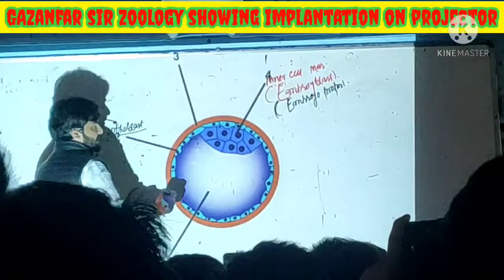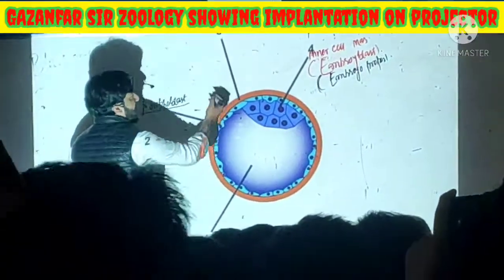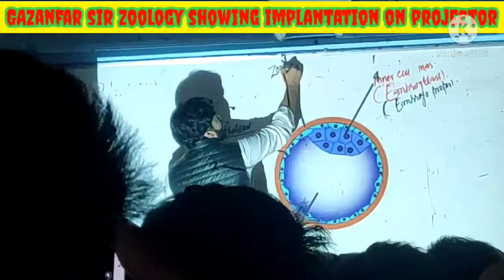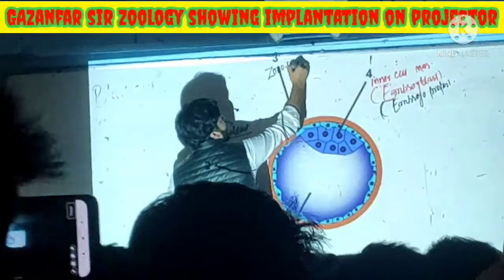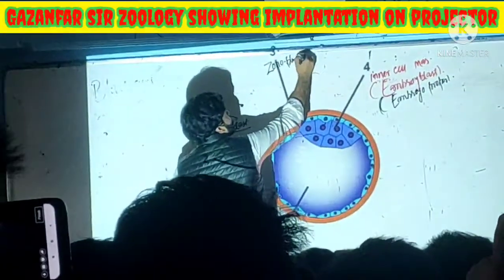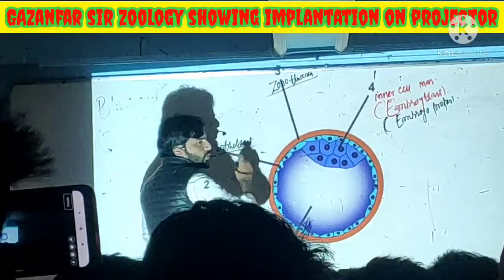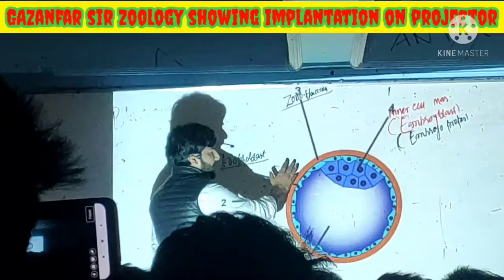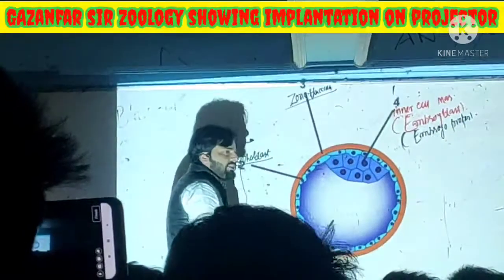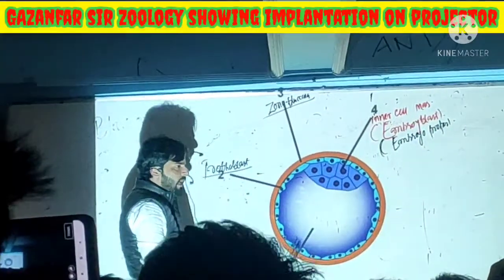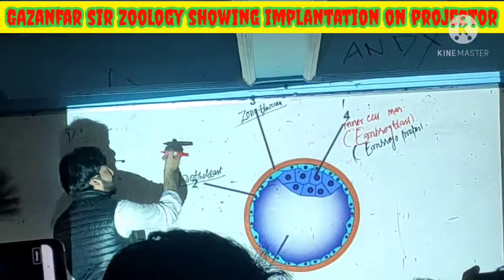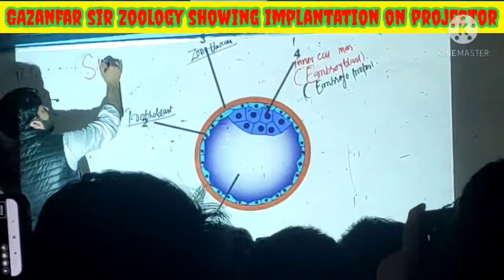We have this orange colored sheet here, and this is called the zona pellucida. The zona pellucida will be disintegrated and eroded under the effect of an enzyme called stapsin.